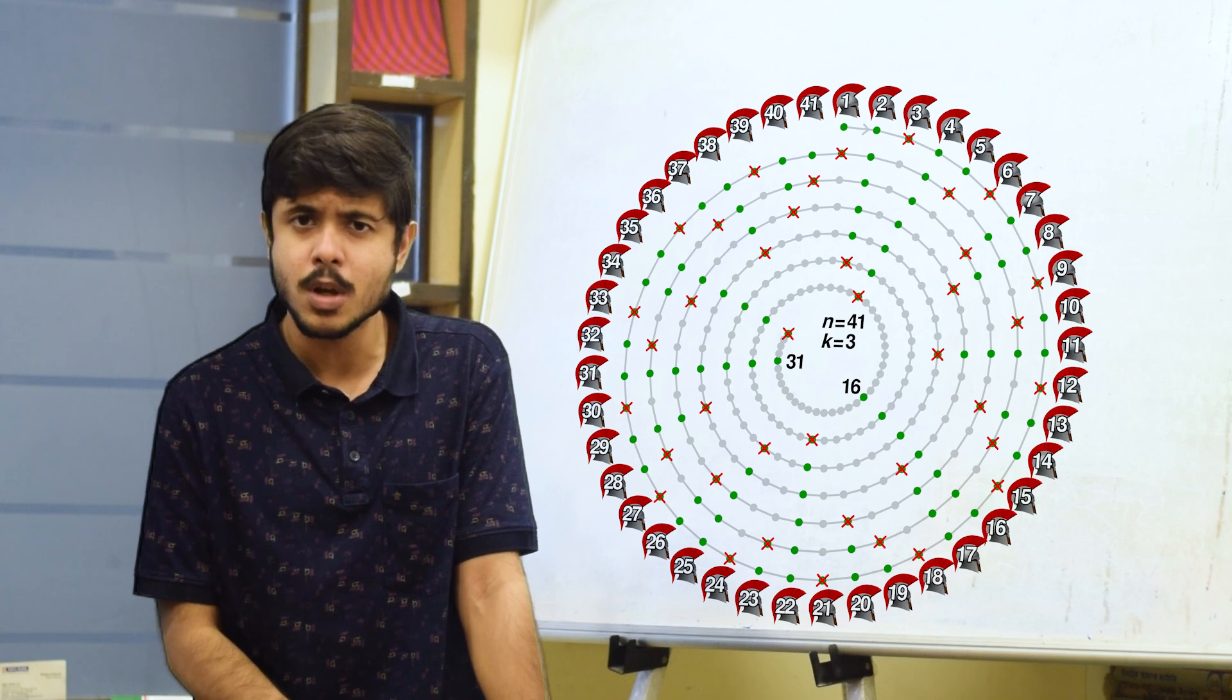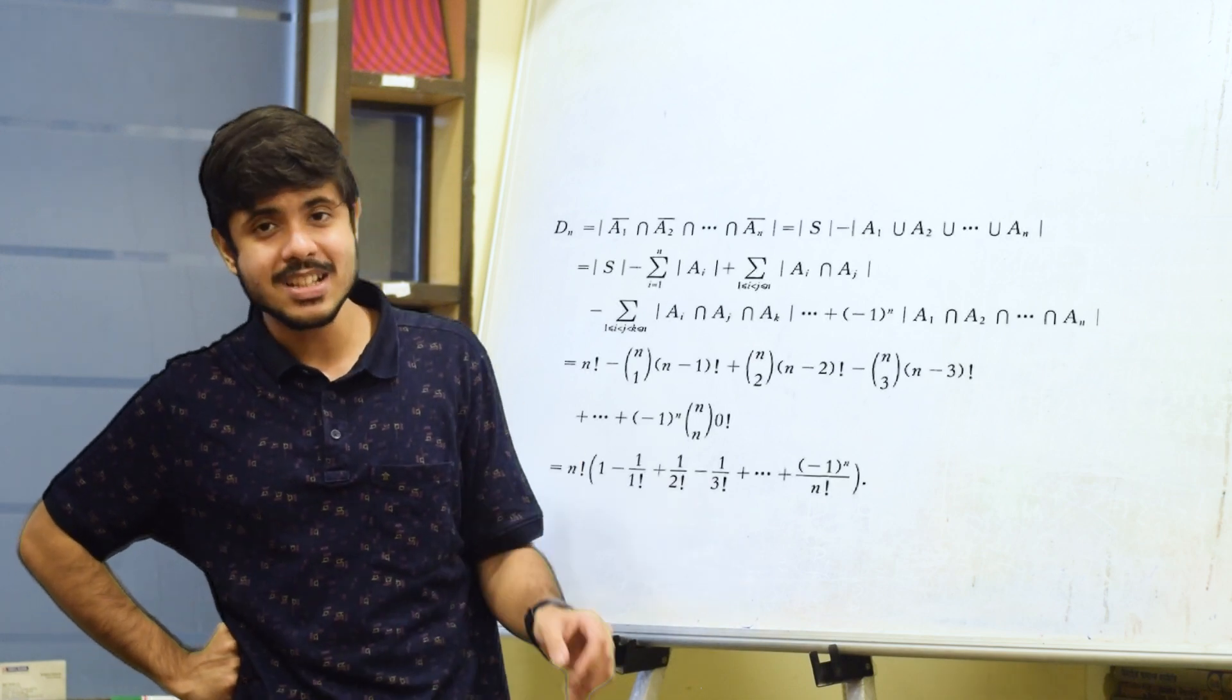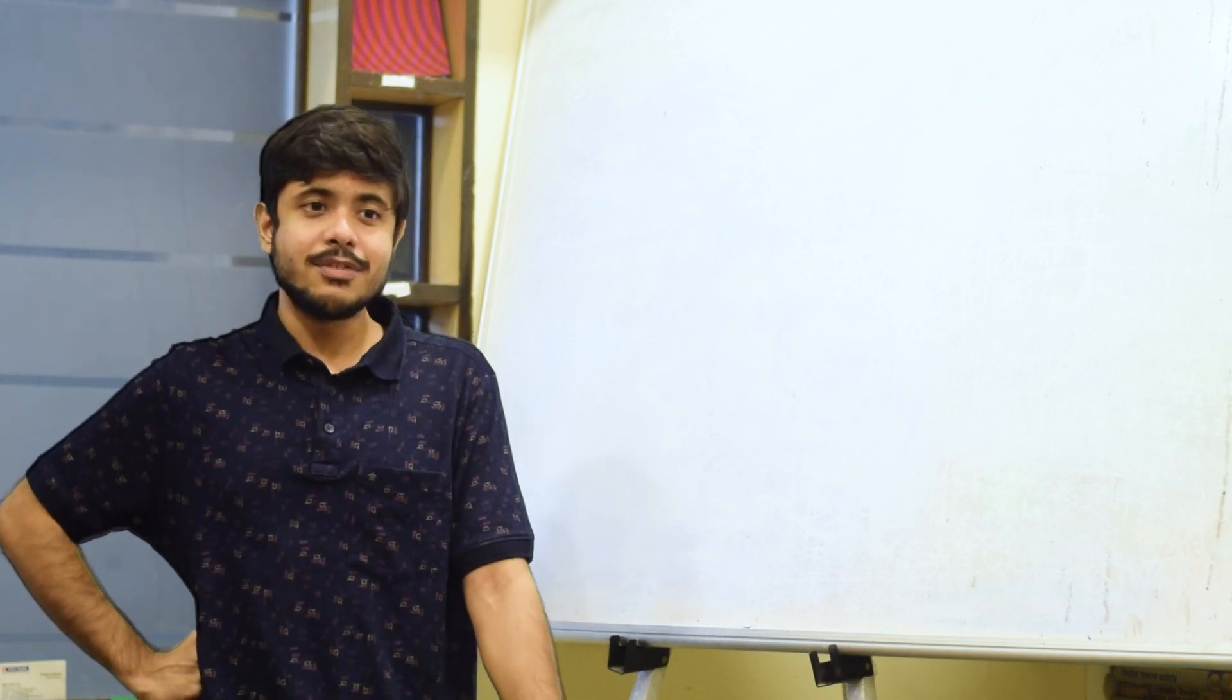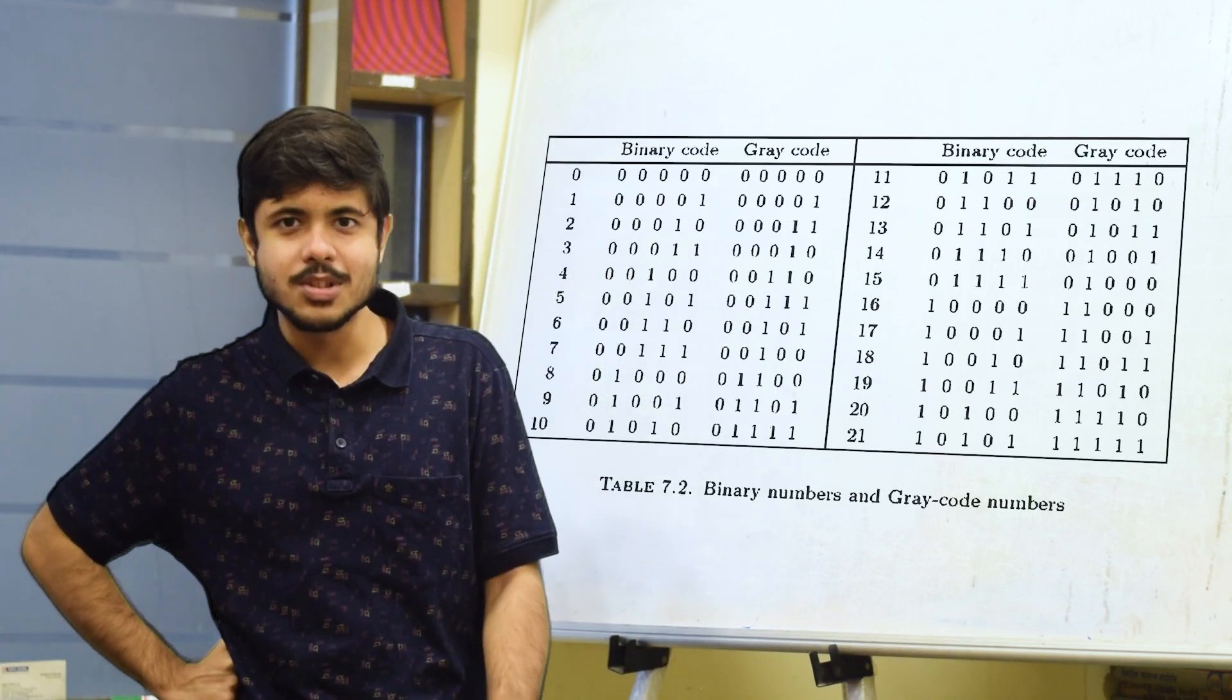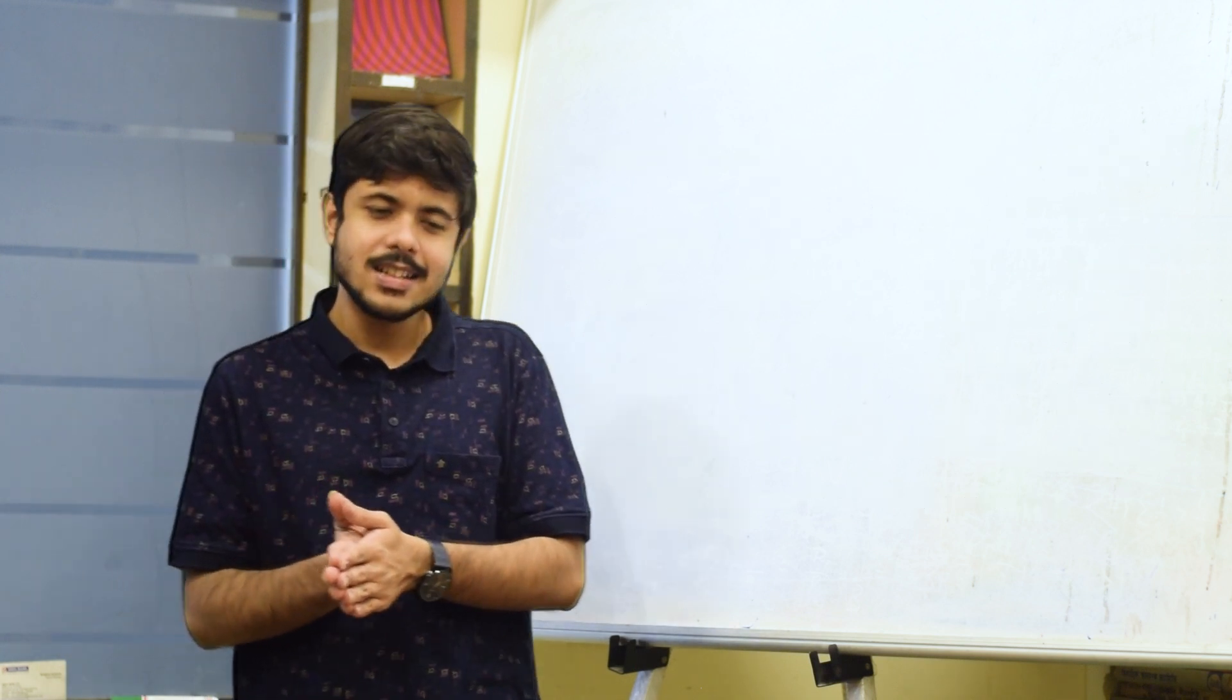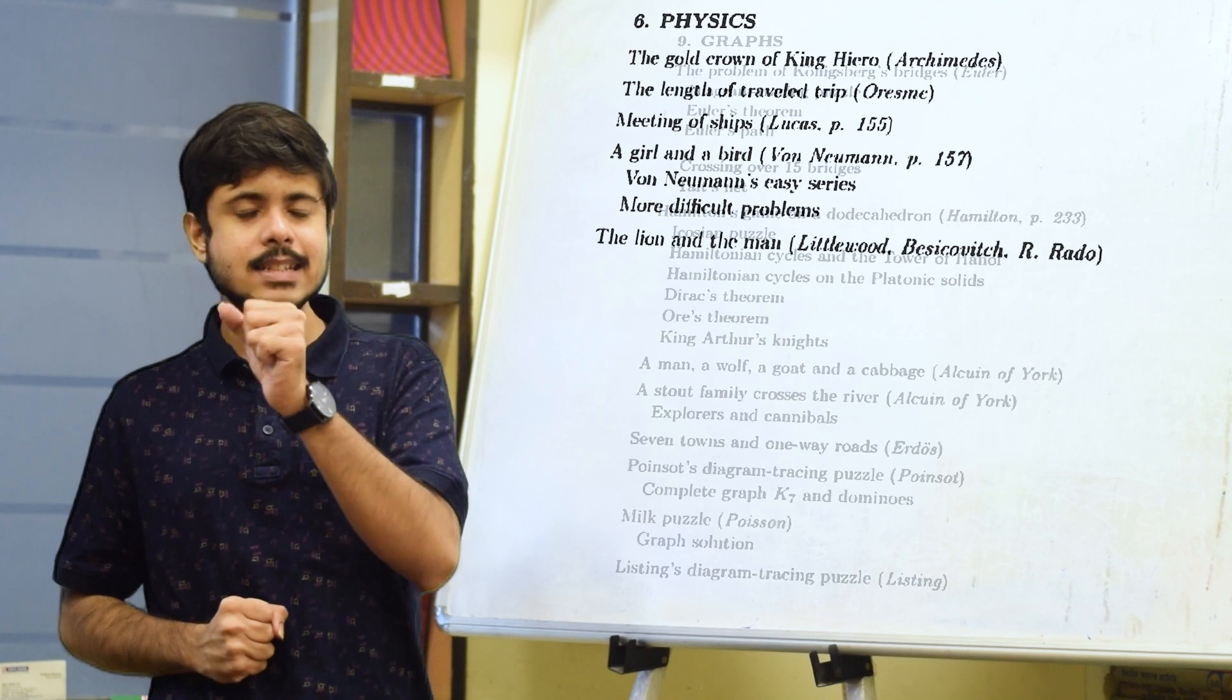There are some absolutely brilliant and some absolutely amazing problems in this book. You would find the Josephus problem. You would find the Archimedes cattle problem. Talking about combinatorics, you'll find the misaddressed letters problem. You will find Kirkman's schoolgirl problem. You will find Arthur Cayley's counting problem. One very interesting feature of this book that actually sets it apart is that it has got two sections that usually these sort of puzzle and recreational mathematics books do not cover. Those two sections are physics and graphs.